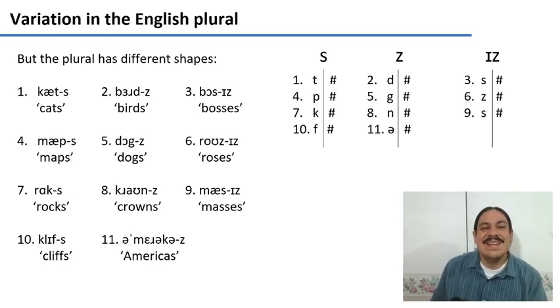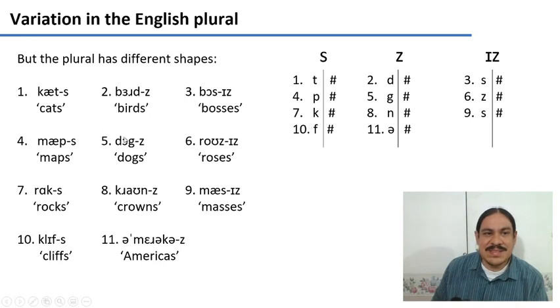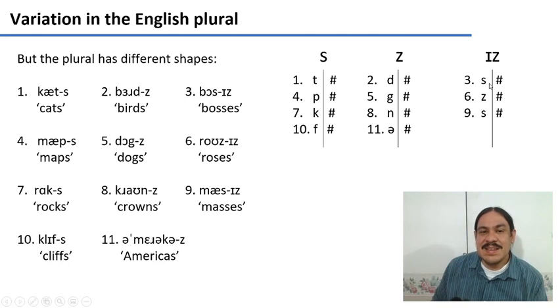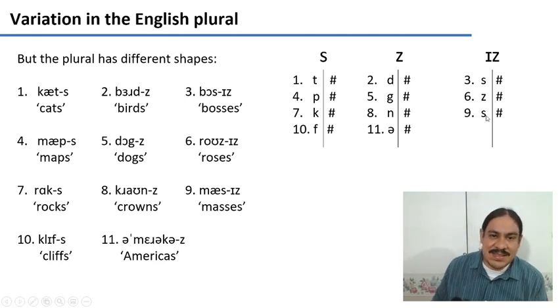Welcome back. So, you should have something like this. The S appears in examples 1, 4, 7, and 10, surrounded by consonants like P, K, and F, and always with the edge of the word to its right. The Z allomorph appears next to D, G, N, and the schwa in America, and it is always followed by the edge of the word. So, is is preceded by S, Z, and S, and always followed by the edge of the word.